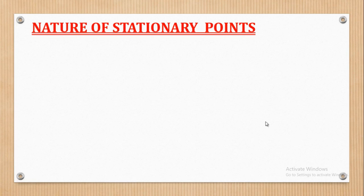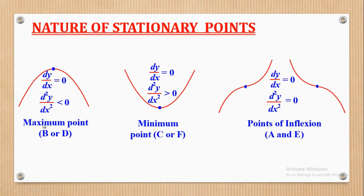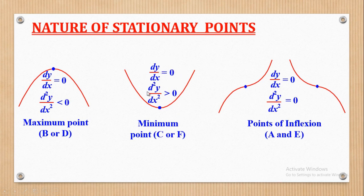We shall now distinguish these stationary points. The nature of stationary points means you identify whether it is maximum, minimum, or inflection. When the stationary point is a maximum point, for example at points B and D, the first derivative equals 0 and the second derivative is less than 0. If the stationary point is a minimum point, for example at points C and F, the first derivative is 0 and the second derivative is greater than 0. For Points of Inflection, both the first and second derivatives are equal to 0.